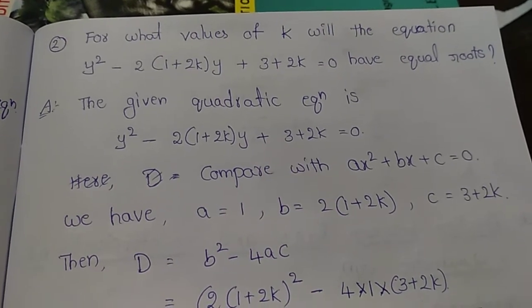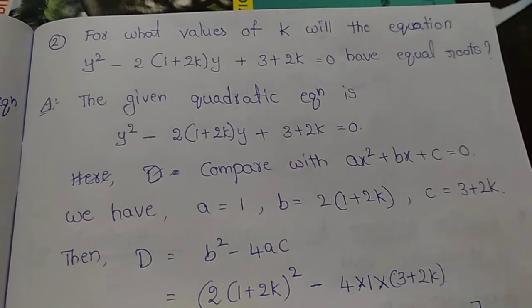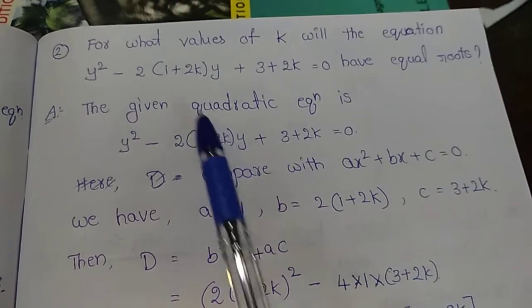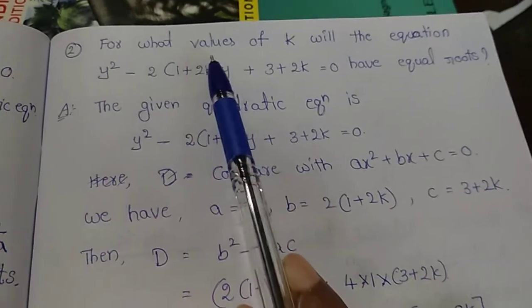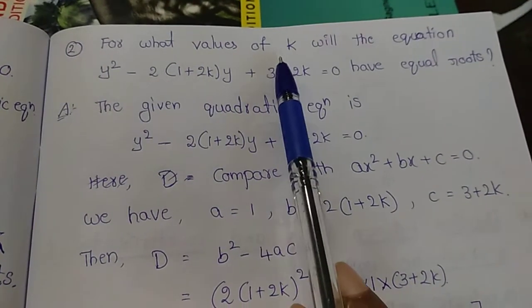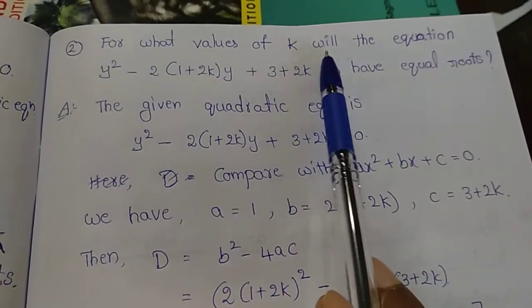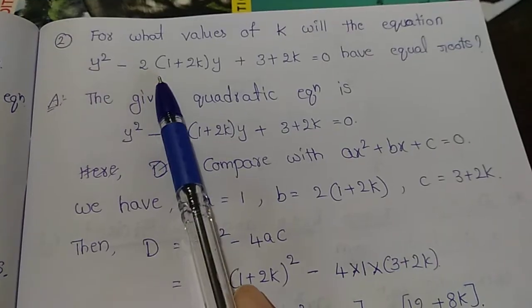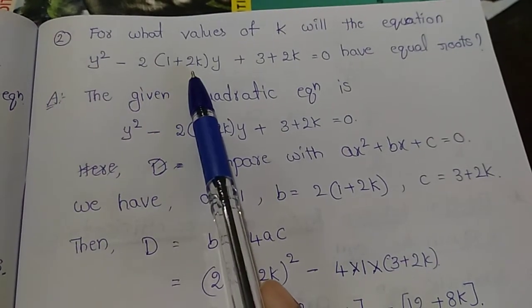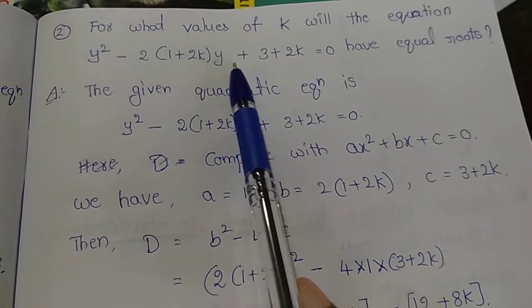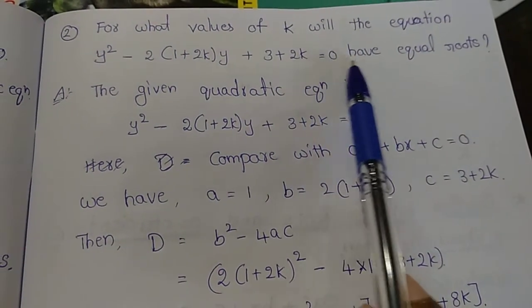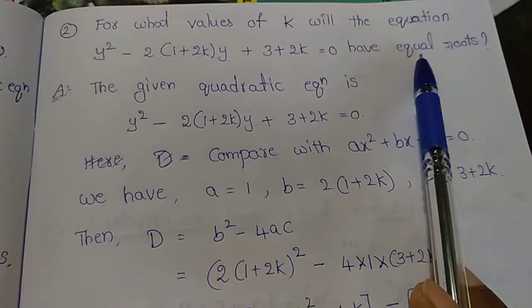Hello everyone. For what values of k will the equation y squared minus 2 into 1 plus 2k into y plus 3 plus 2k equals 0 have equal roots?